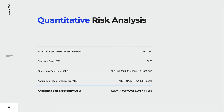Every time the volcano eruption hits the data center, the entire asset value is destroyed. The probability, expressed as the annual rate of occurrence, is hard to determine. Based on estimation, we set the ARO to one occurrence in a thousand years. Finally, the ALE — the annualized loss expectancy — is equal to 1,000 dollars.